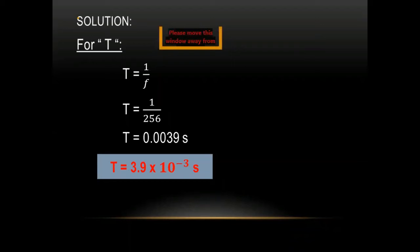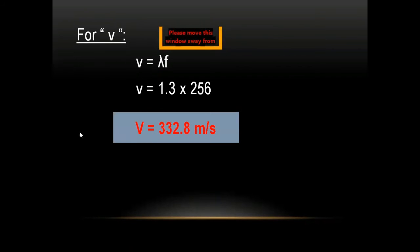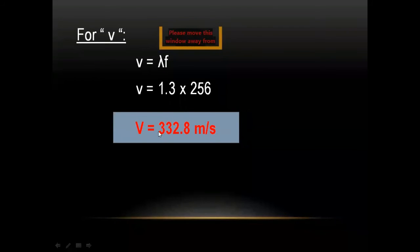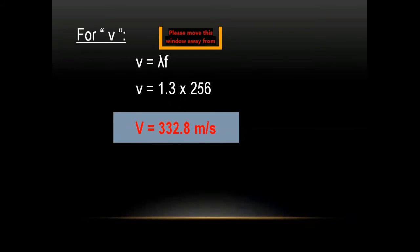Part B — finding wave velocity. Using v = λf, we replace λ with 1.3 and f with 256. The answer is 332.8 m/s. Take a screenshot of this slide.